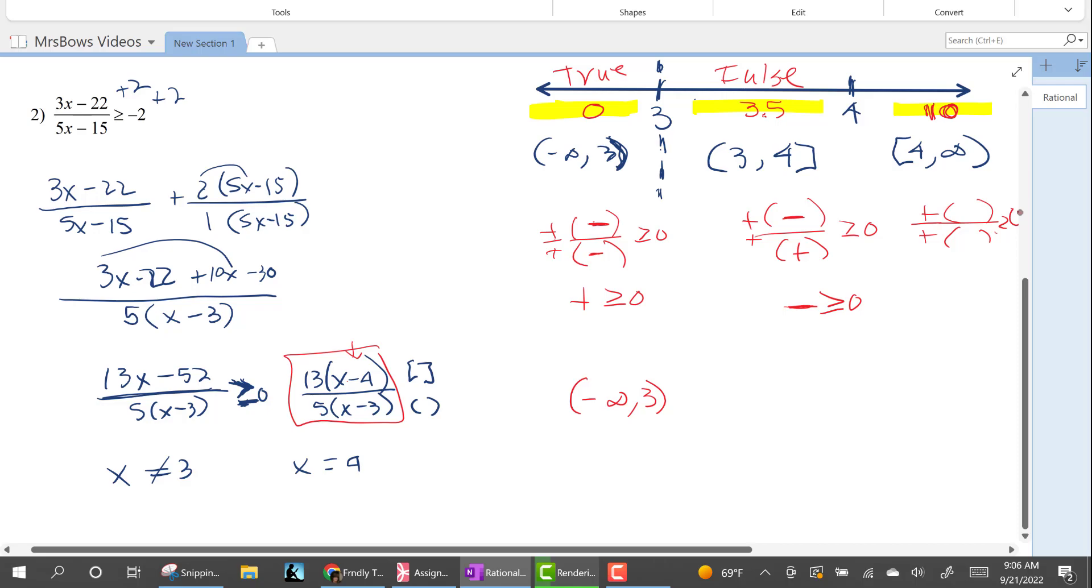And then finally, 10. 10 is bigger than 4, 10 is bigger than 3, so we end up with positive. So we're back to positive numbers greater than or equal to 0. So that's true. So this interval can't be used, so the last interval is true.